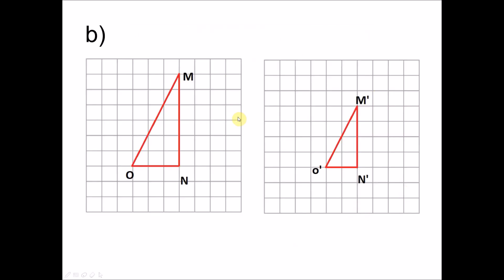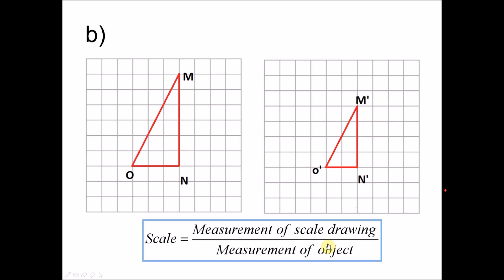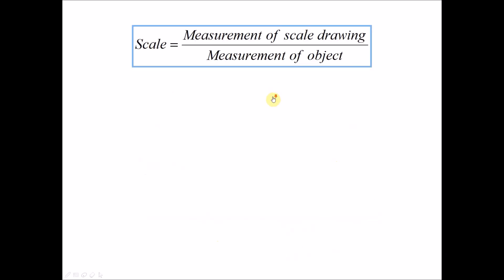Look at question B. Again, this is the object and this is the scale drawing. We use the formula again. Measurement of the scale drawing: two units. Measurement of the object for the corresponding side: three units. So two over three. The scale is two over three. We want to write this in ratio form with one on the left, so divide by two on both sides: you get one is to three over two.